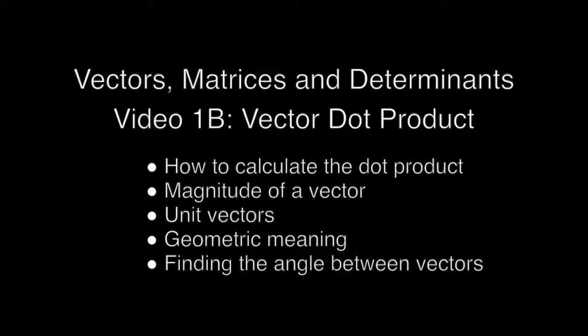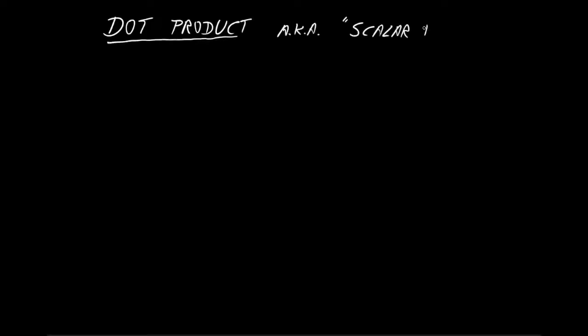Welcome to the second of these videos. We're going to look at the vector dot product, also called the scalar product. We'll look at the magnitude of a vector and the meaning of unit vectors, the geometric meaning of the dot product, and finding the angle between vectors using the dot product. The dot product is a way of combining two vectors to produce a number — a simple scalar — hence the alternate name scalar product.